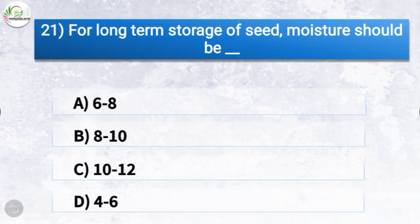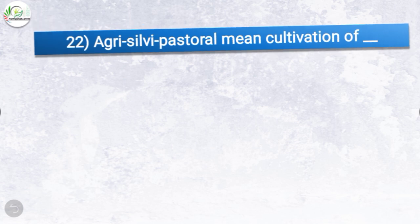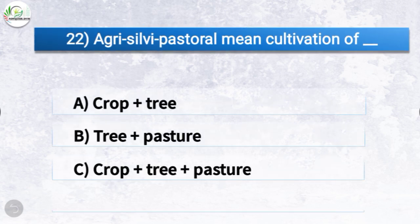Question number twenty-one: for long-term storage of seed, moisture should be at what percentage? The options are six to eight, eight to ten, ten to twelve, or four to six. The correct answer is option A, six to eight. So for long-term storage of seed, moisture should be six to eight percent.